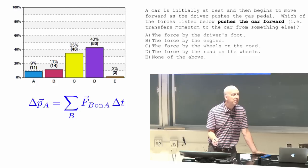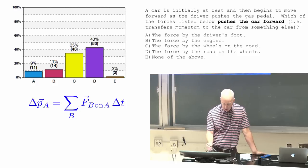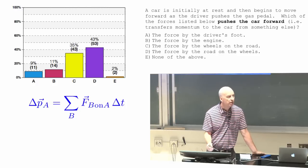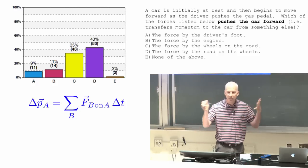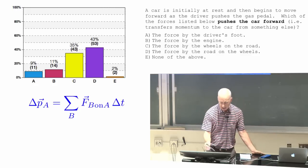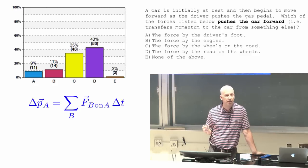Delta P, the change in momentum of some object, depends on forces on that object by something else outside. And it depends on the time over which it interacts.